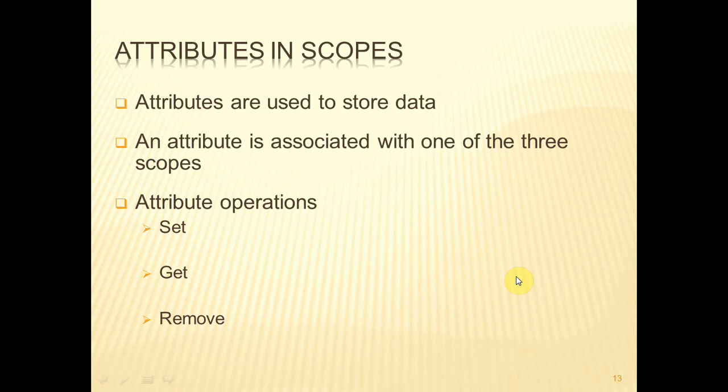Attributes are used to store data, and we can associate an attribute with a given scope. We do that by setting an attribute, which will create the attribute in the nominated scope. We can then get access to that attribute by calling the get method, and we can remove the attribute from the scope by calling the associated remove method.